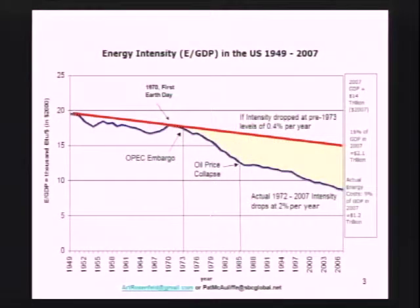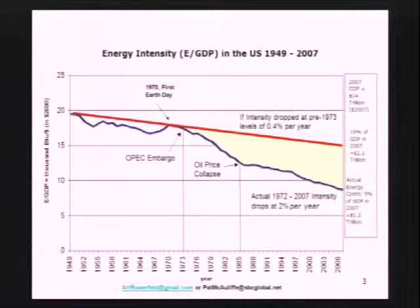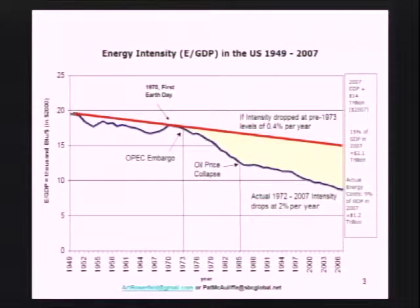I want to put energy efficiency in context. Paul just mentioned that there are lots of savings — trillions of dollars worth — if we can get our act together and exploit it. I wanted to show you a curve to show what a big business energy is, and why improving it a few percent a year makes a lot of difference. This is a plot not of energy efficiency but of energy intensity, which is the inverse of efficiency — defined as the amount of energy you need to increase gross domestic product by $1,000. And it inexorably comes down with time as we get smarter.